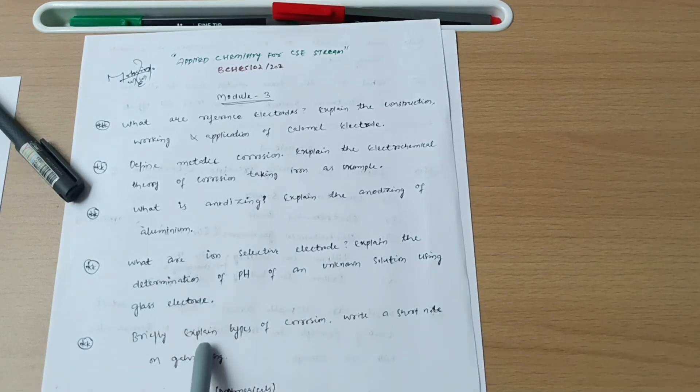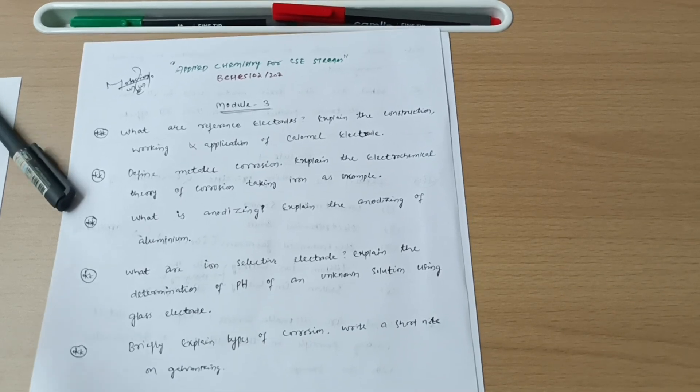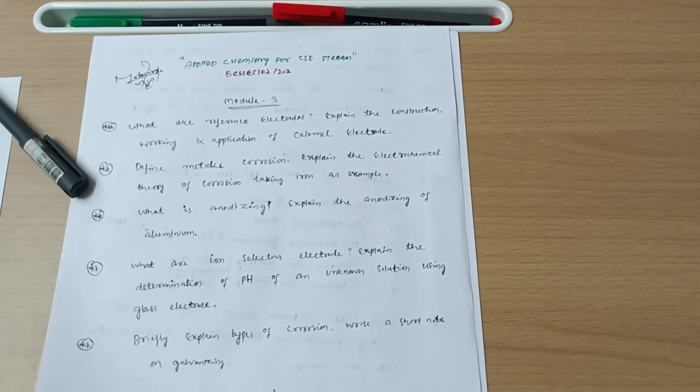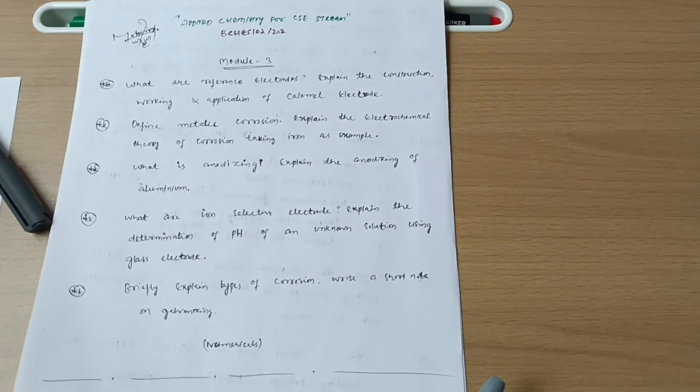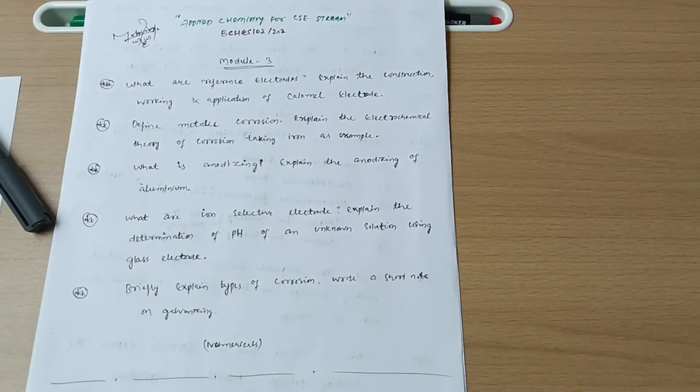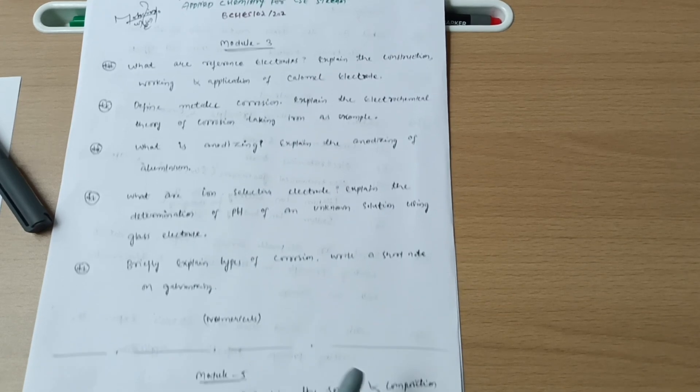Next is briefly explain types of corrosion, write a short note on galvanizing. And some numericals are over there so you should refer the previous year papers, go through the numerical part which are very easier ones where you have to calculate the CPR. So this much is enough to cover module third.